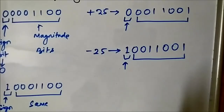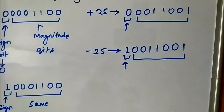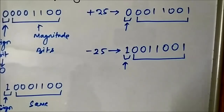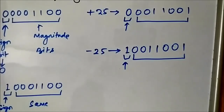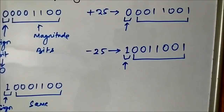Positive numbers are represented the same way across sign magnitude, 1s complement, and 2s complement — there will be no change. But for negative numbers, the representation will differ across the three systems. Always pay attention to what system is used and what bit format is used — whether 4 bits, 8 bits, or any other number of bits. We have discussed the basic representation of signed numbers using the sign magnitude system. I hope you liked this video — please subscribe to Engineering Tutorial for more videos on electrical, electronics, instrumentation, and communication engineering. Thank you.